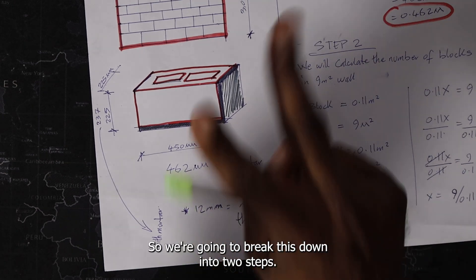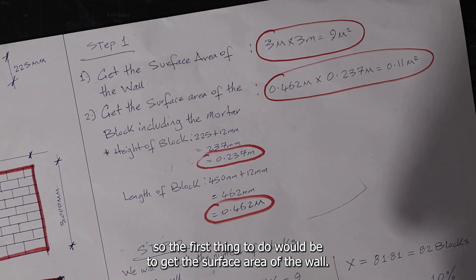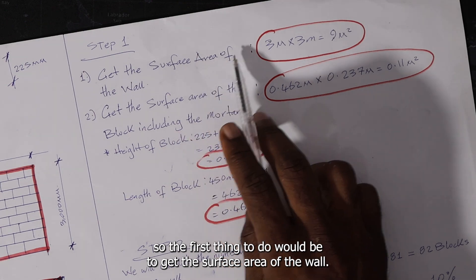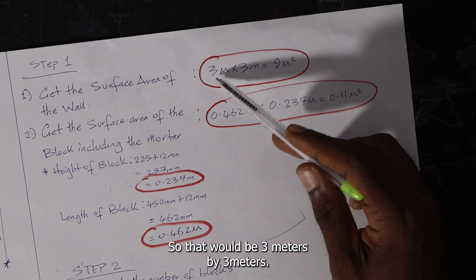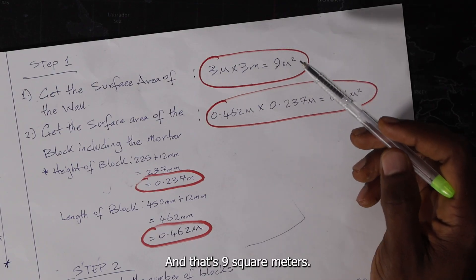So we're going to break this down into two steps. So the first thing to do would be to get the surface area of the wall. So that would be 3 meters by 3 meters. And that's 9 square meters.